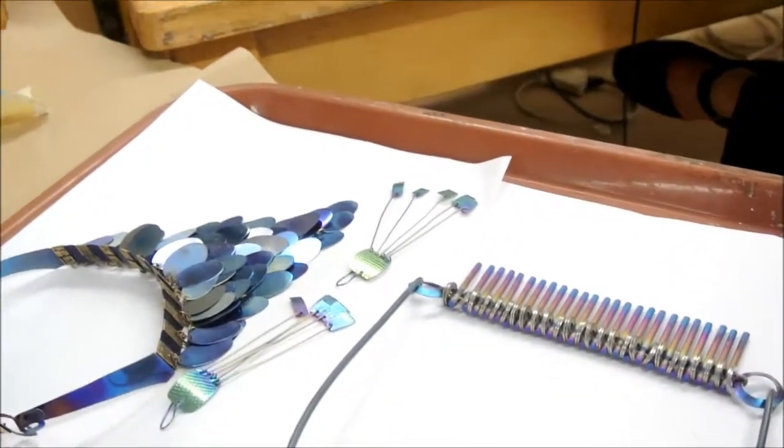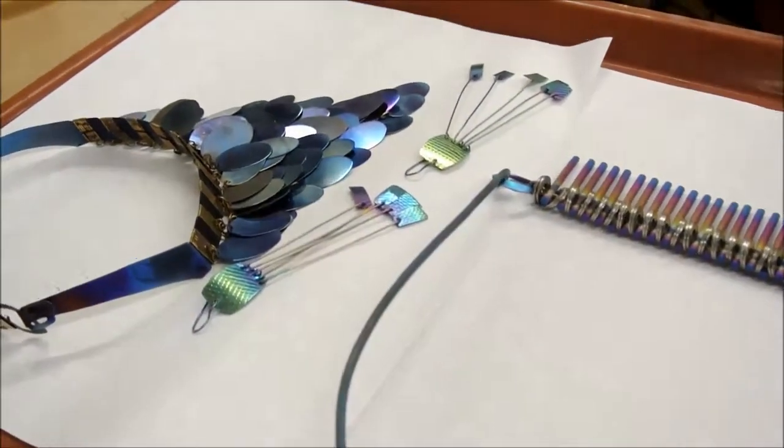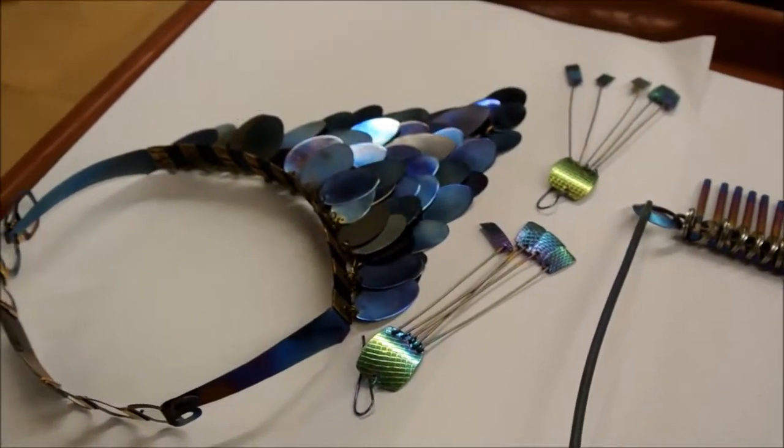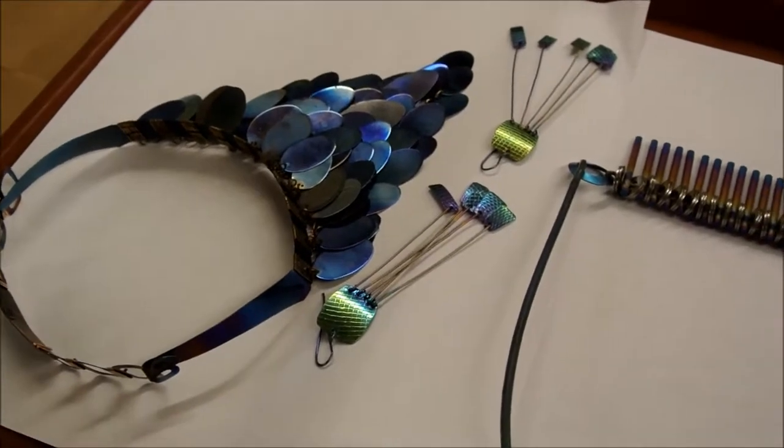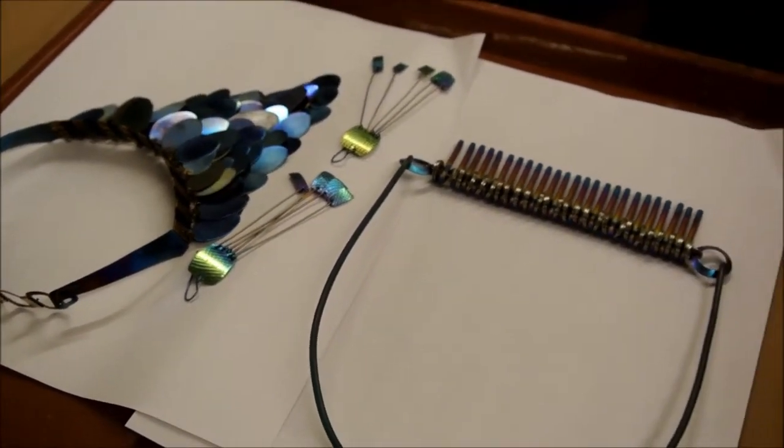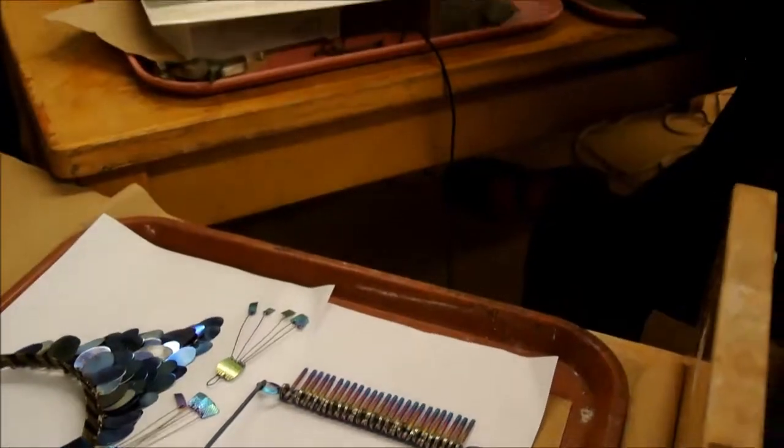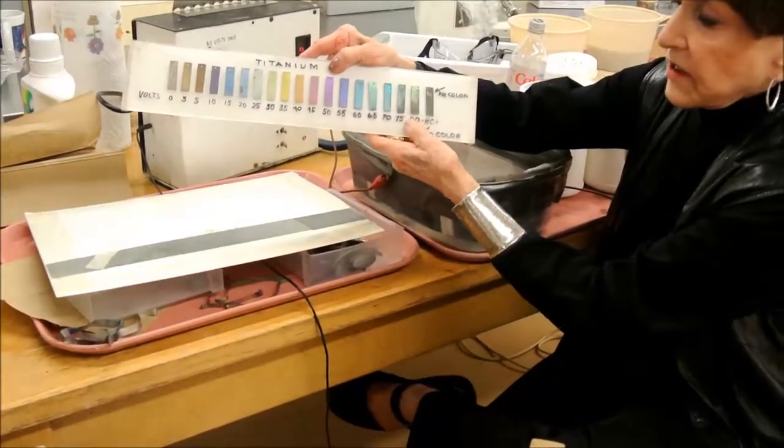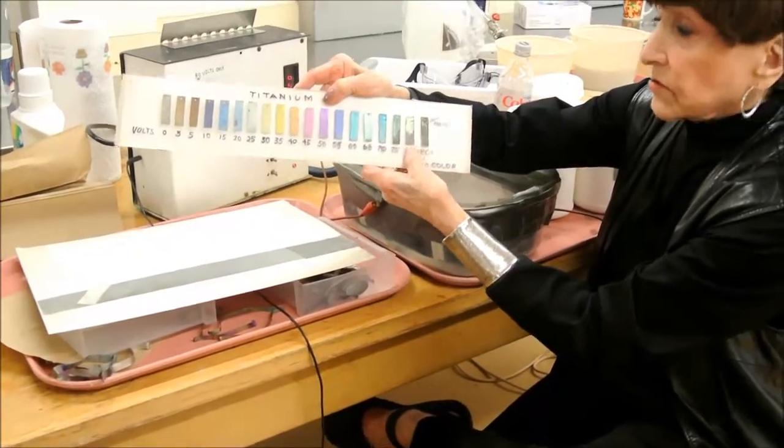We can dial our voltage by dialing to 90, 25. 25 volts gives us that color. 90 gives us anything around this green area.